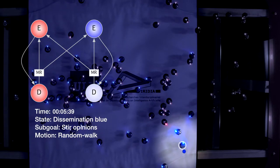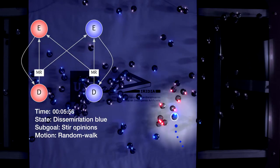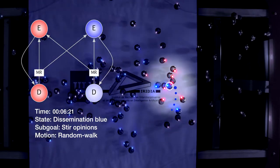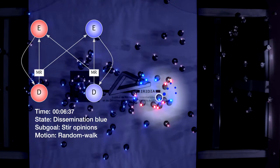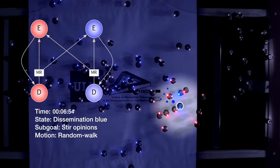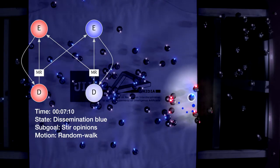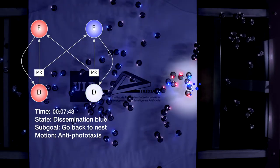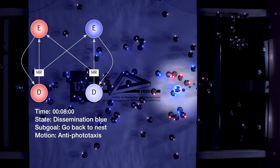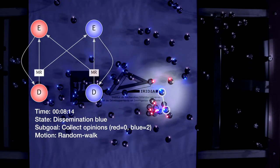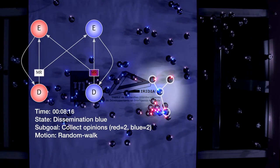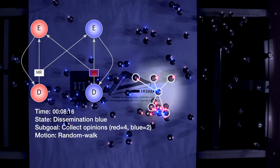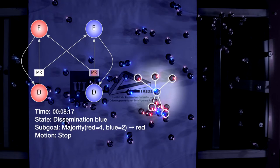In the dissemination state, the robot is in the nest and its primary goal is to promote its current site preference. To do so, the robot repeatedly broadcasts its preference while performing a random walk. Before moving to the exploration state, the robot collects the preferences of its neighbors.